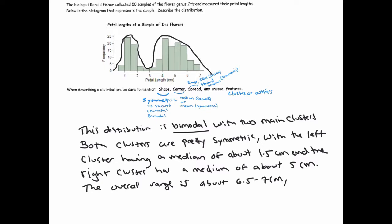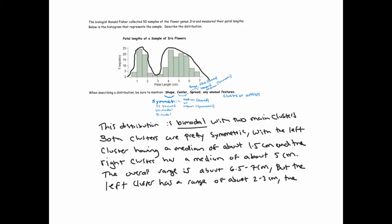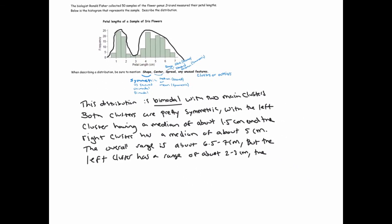Now maybe we'll talk about the two clusters separately. It looks like the left cluster probably has a range of about - it looks like from 0.5 to 3 centimeters is about where that peak ends - so has a range of about 2 to 3 centimeters. And the right cluster has a range - it looks like that distribution goes from like 3 to 7 - so has a range of about 4 centimeters.